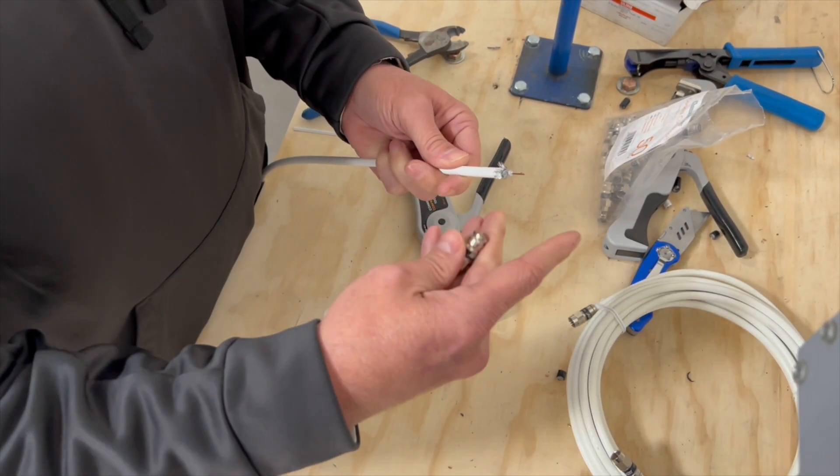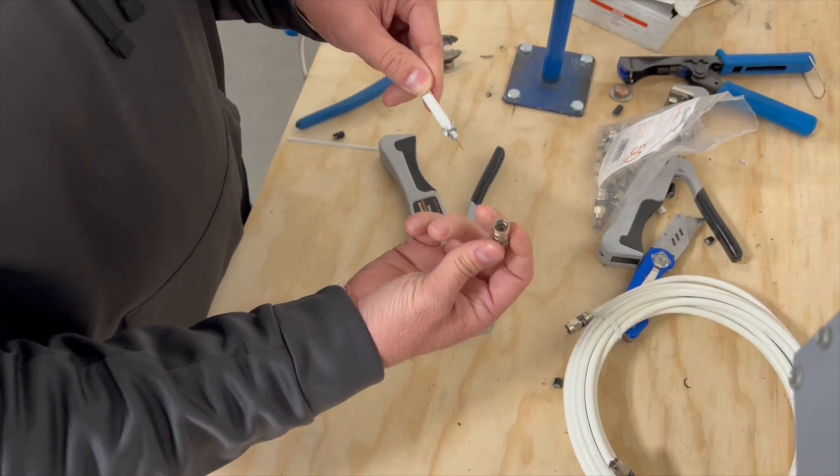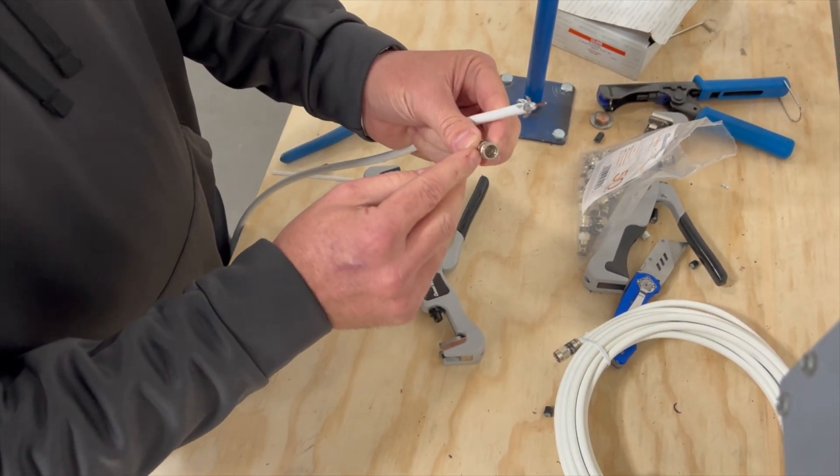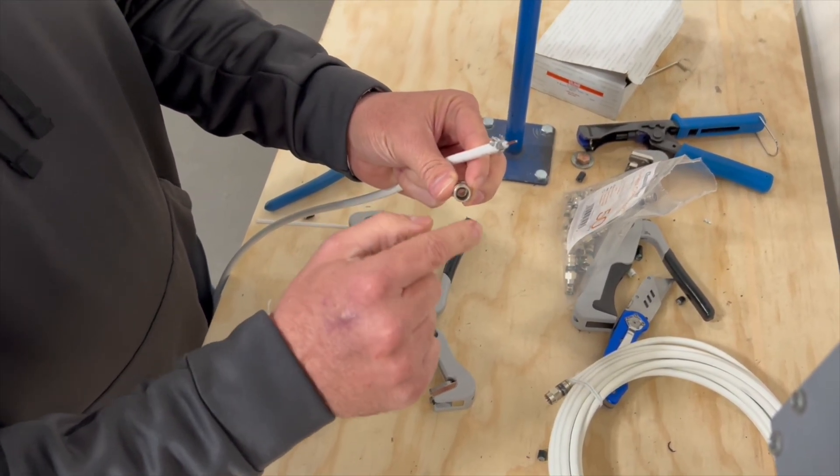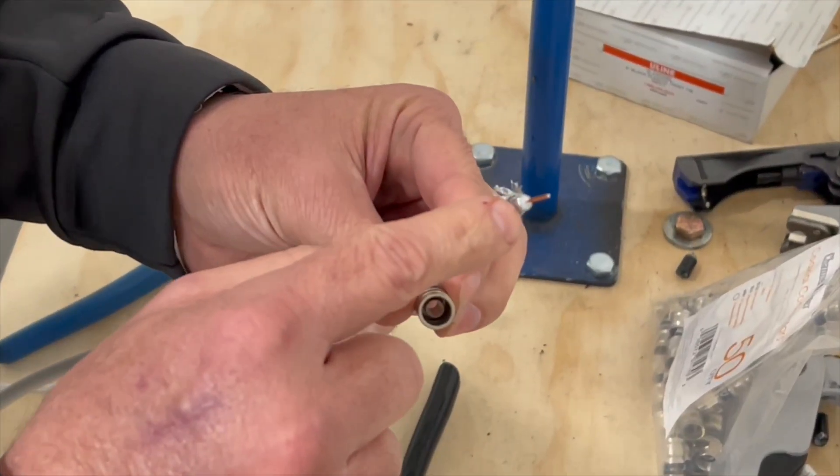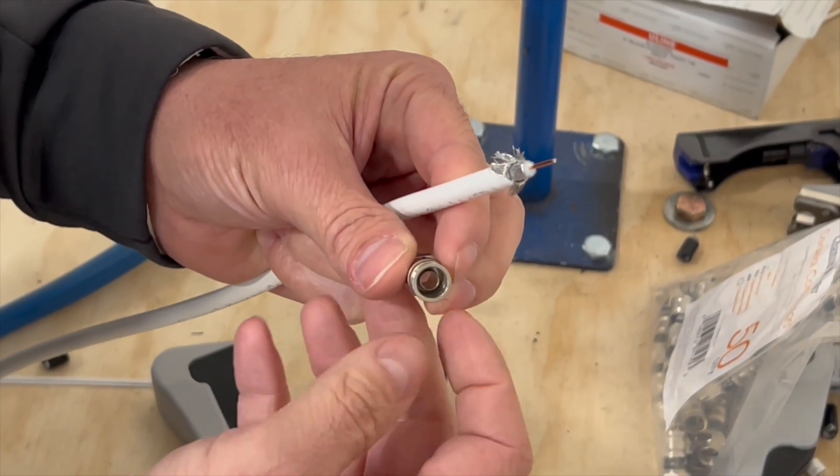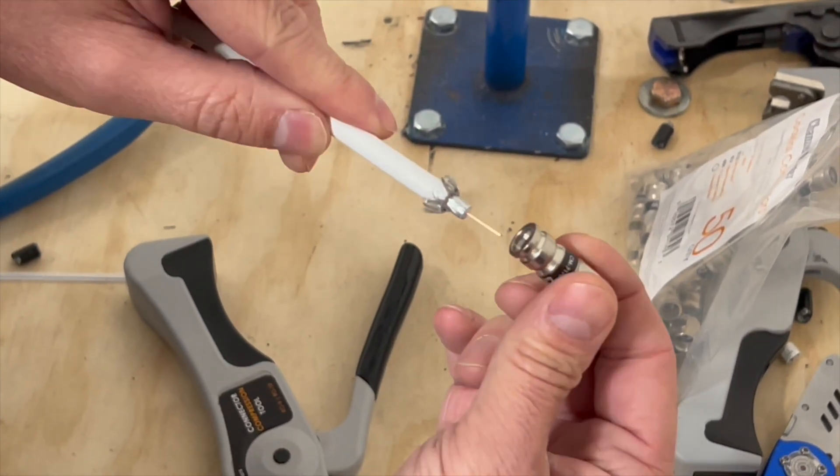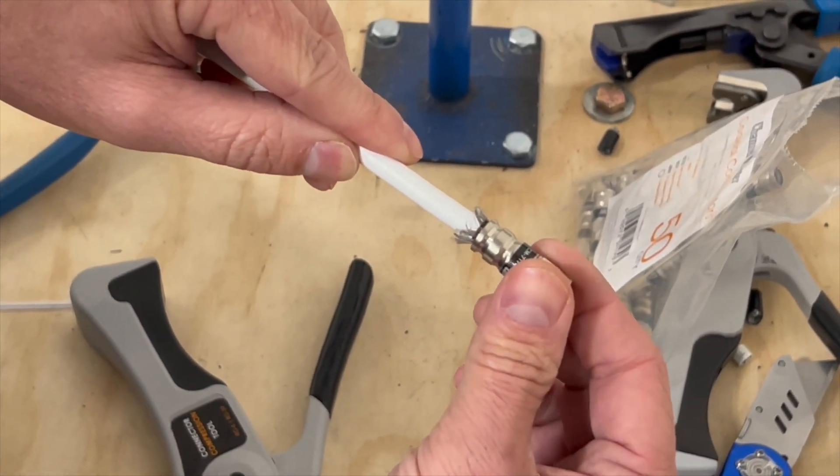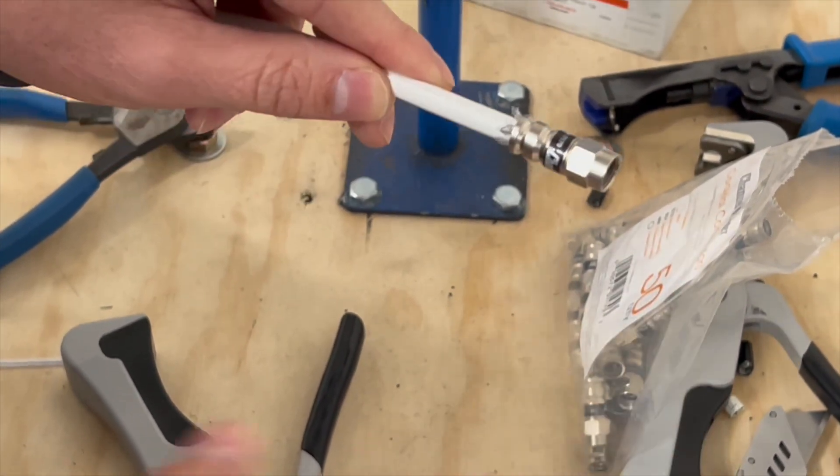As you'll see inside the connector, there's a circle in there. The dielectric material, which is this foam material, will slide inside of that. What I usually tell people to do is put the center conductor in first and then easily make sure it seats on there.